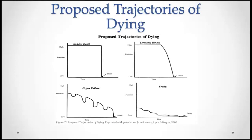Three distinct illness trajectories are outlined in the slides. Terminal illness — often cancer — shows a trajectory with steady progression and usually a clear terminal phase with a sharp decline. Organ failure, seen in respiratory or heart failure, shows a gradual decline punctuated by episodes of acute deterioration and some recovery, although often not returning to the previous level of function or independence. This is the sawtooth effect visible in the graphic.